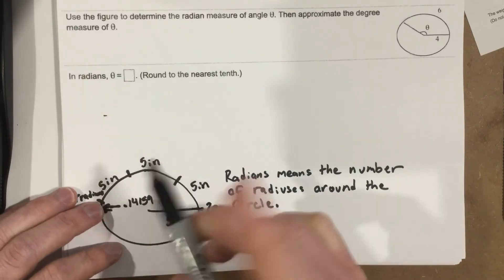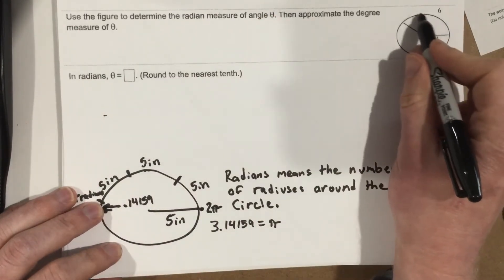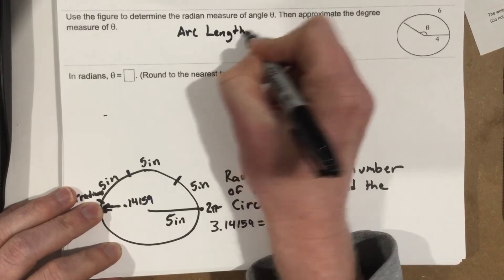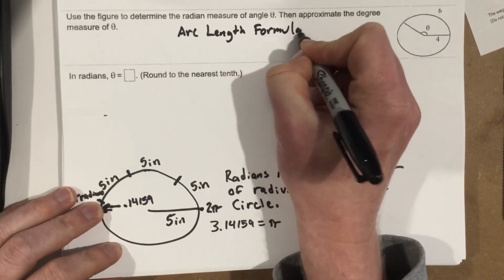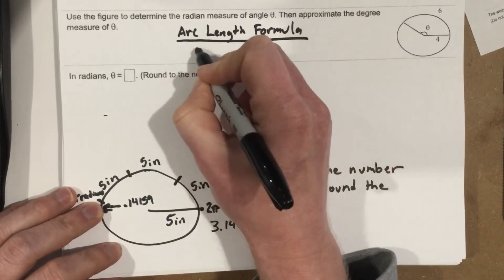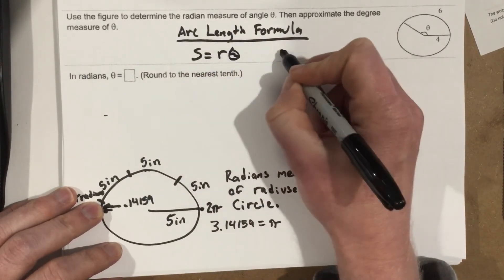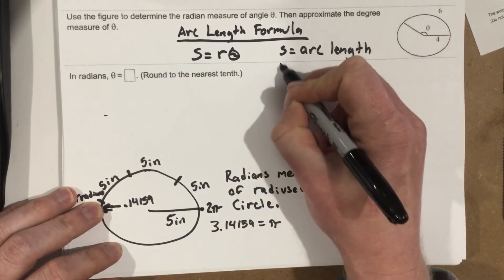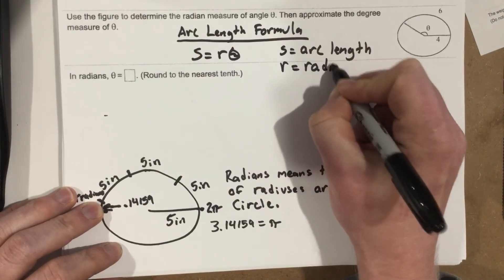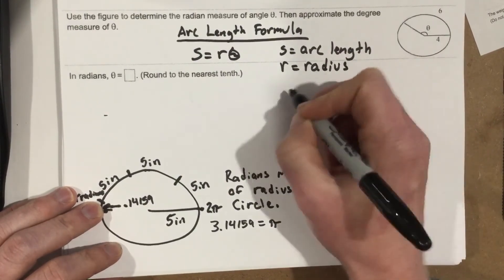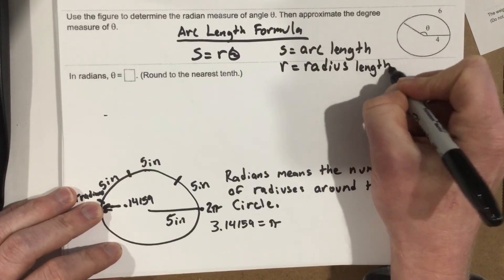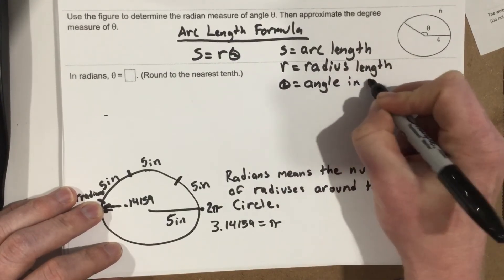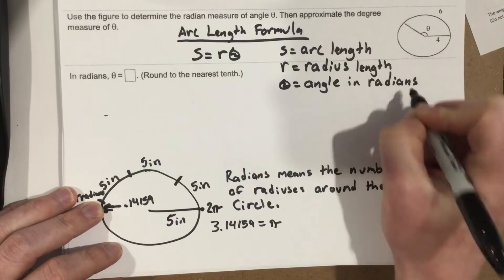So let's get back to this problem. We know that there is a formula that will give us the arc length. The arc length formula is S equals R theta. S equals arc length, R equals radius length, and theta is the angle in radians. That's key. Angle in radians. Don't use degrees on this.